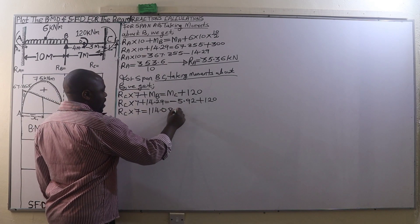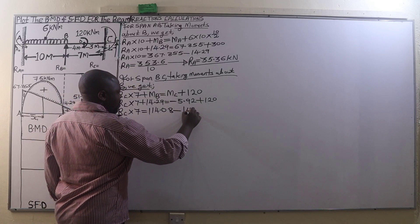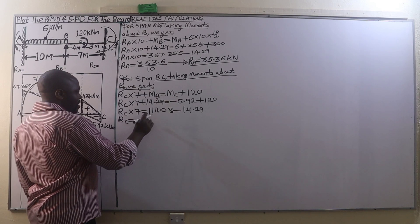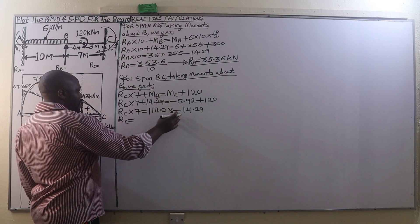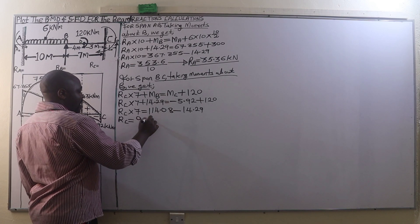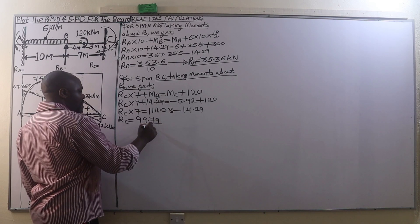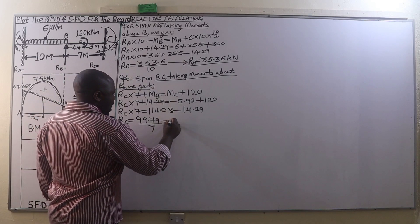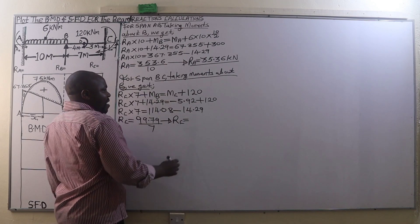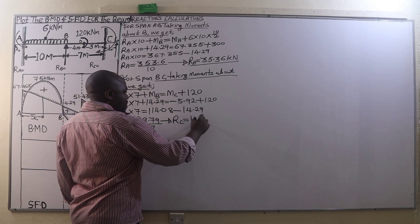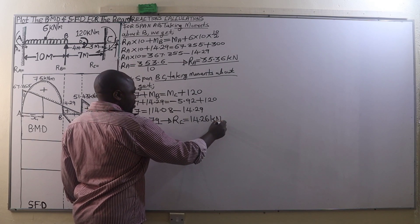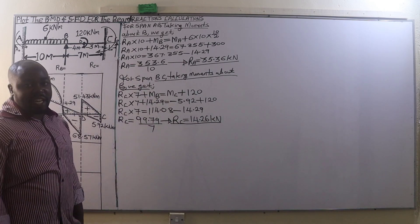114.08, then we subtract 14.29, and we get RC times 7 equal to 99.79. Dividing by 7, this gives us a reaction at C of 14.26 kN. So that is the reaction at C.